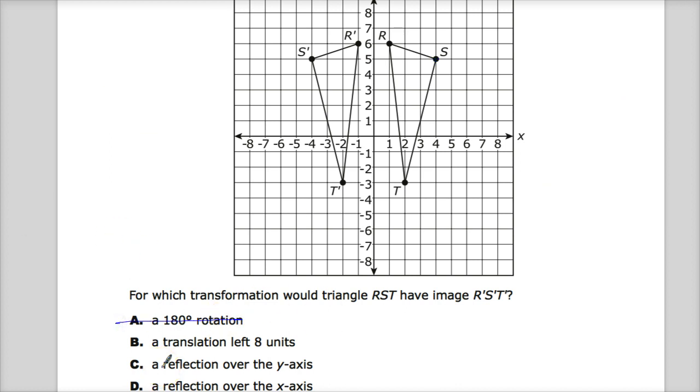Translation left of 8 units. I would imagine that one of them works, so you'll jump on this as a possible choice. Translation means that I just move the point. So left 8 units: 1, 2, 3, 4, 5, 6, 7, 8. Oh, that's looking great. The problem is it only works for that one point. Everything else totally fails. If I try to go from R to R prime, 1, 2—that's not 8, so this one's out as well.